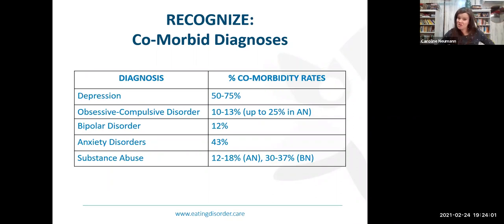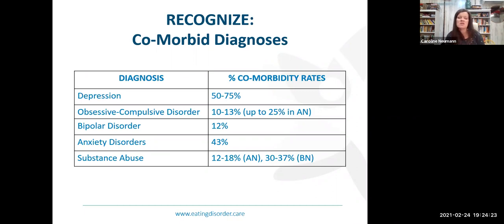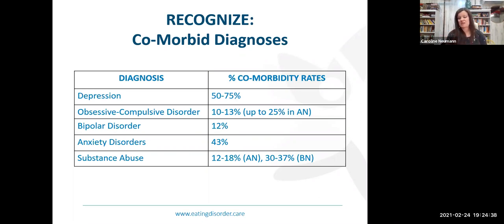The comorbidity with eating disorders is very high across the board — depression, obsessive compulsive disorder, bipolar disorder, anxiety, and substance use. In my practice, I have never just diagnosed an eating disorder in isolation — there has always been a secondary mental health diagnosis. High comorbidity, high co-occurring mental health diagnosis.